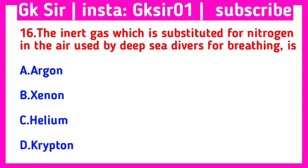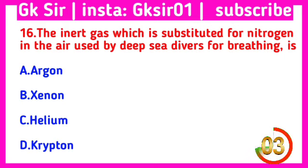Question number 16. The inert gas which is substituted for nitrogen in the air used by deep sea divers for breathing is — Option A: argon, Option B: xenon, Option C: helium, Option D: krypton. The correct answer is Option C: helium.